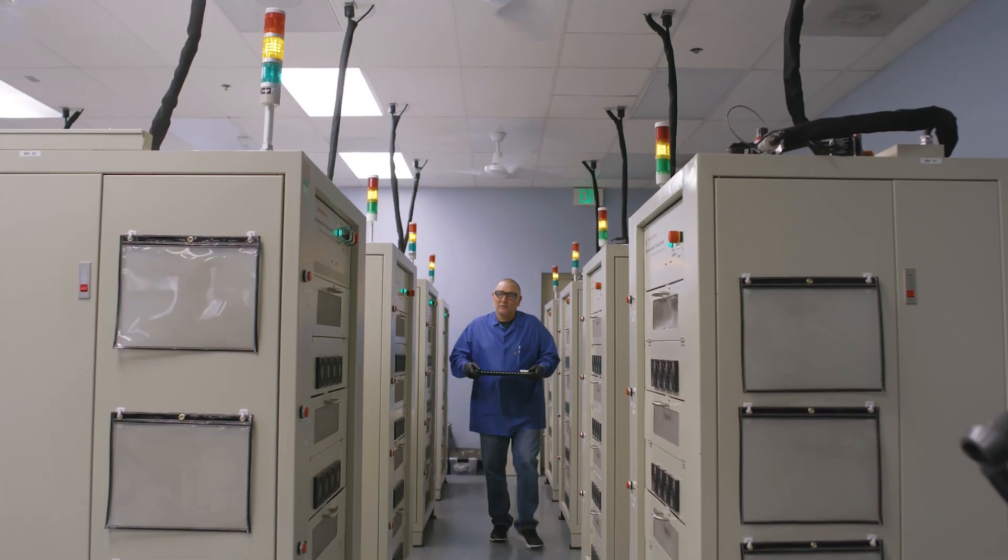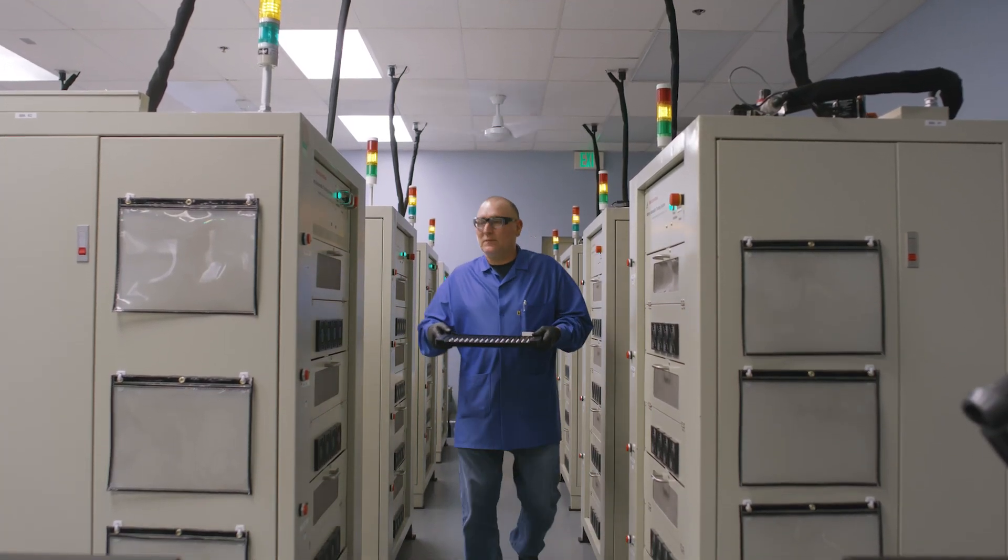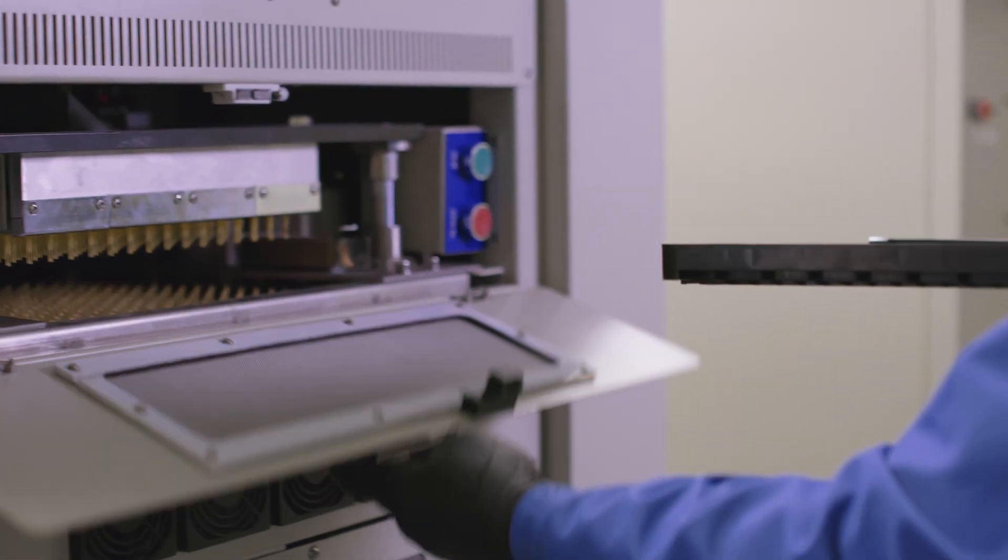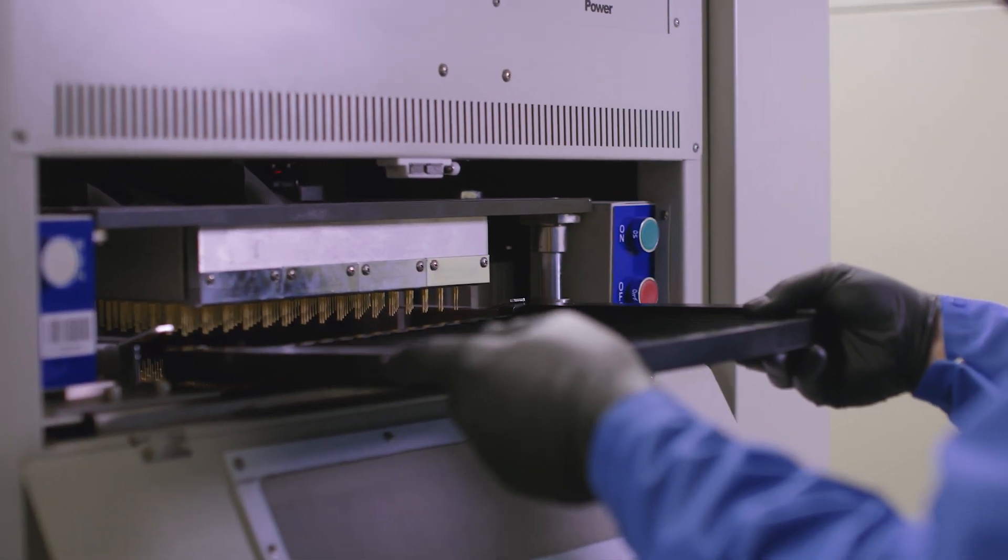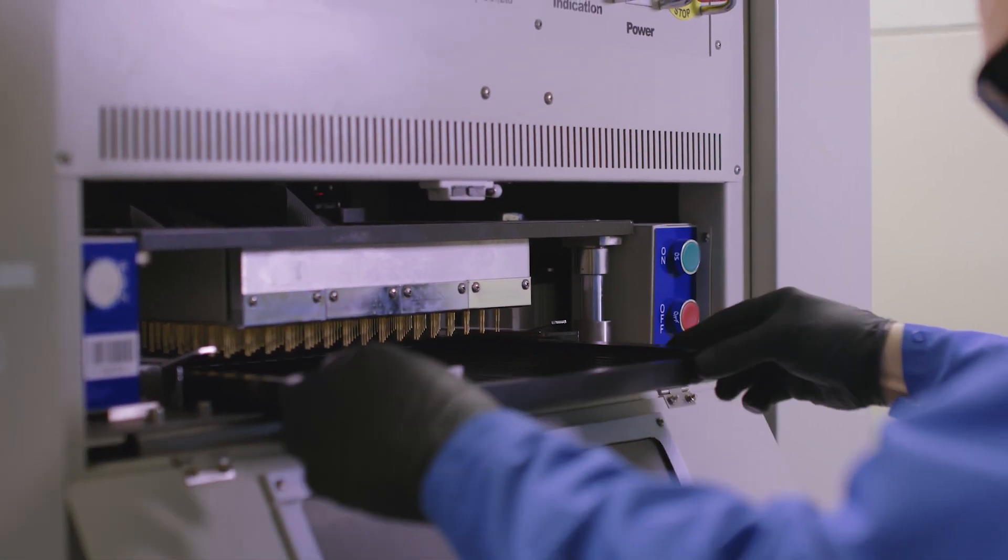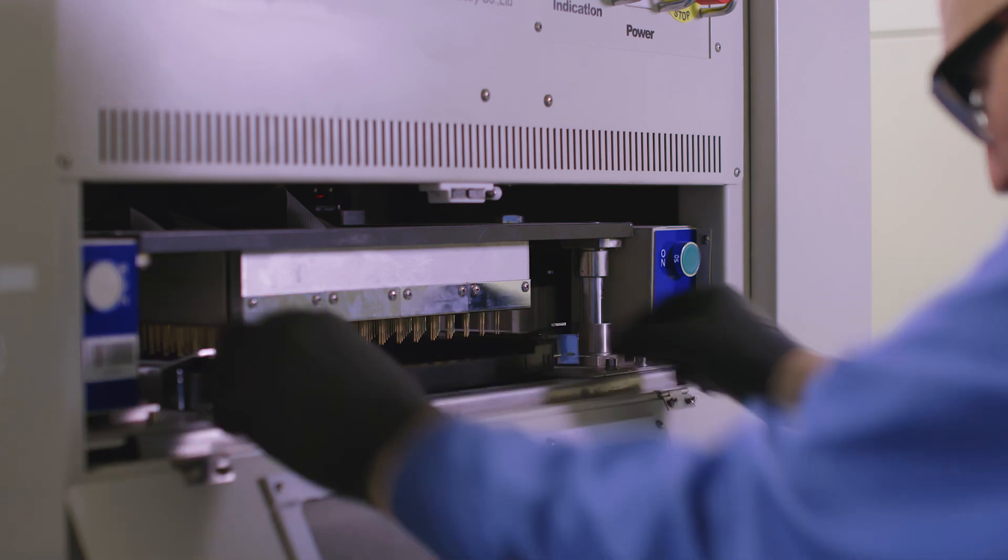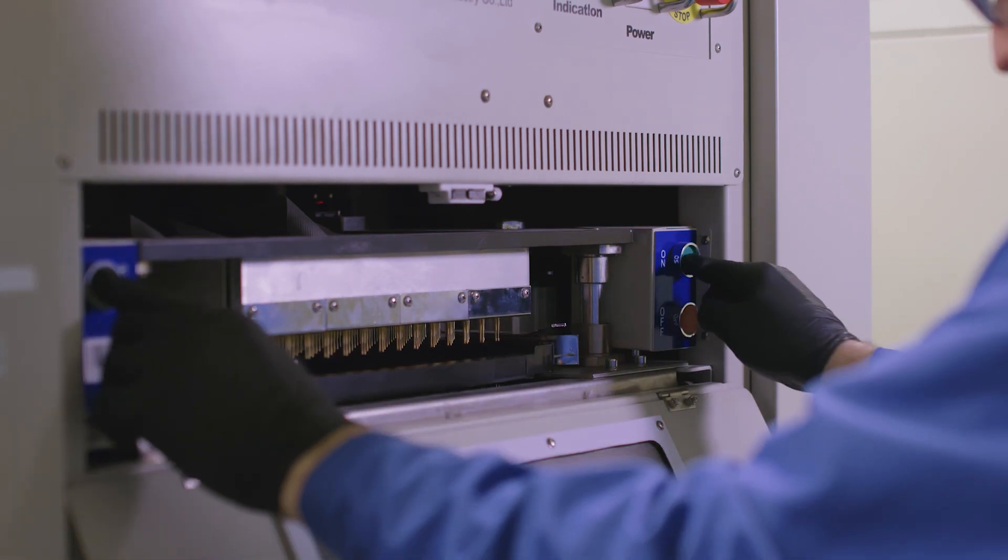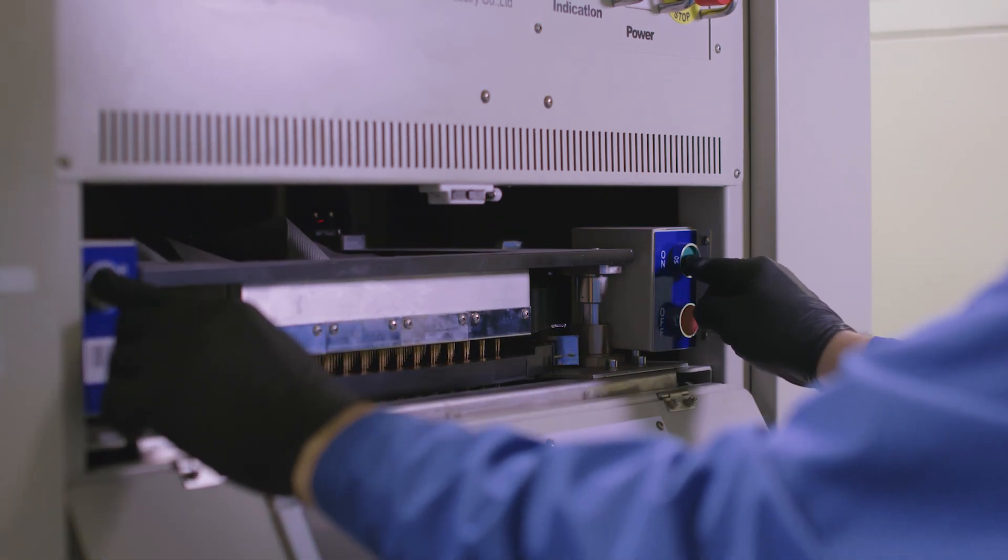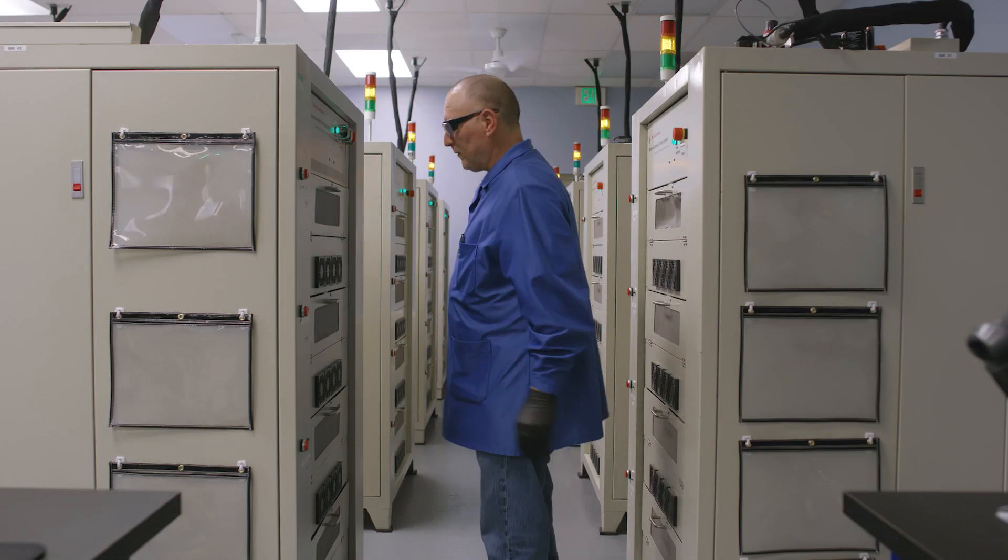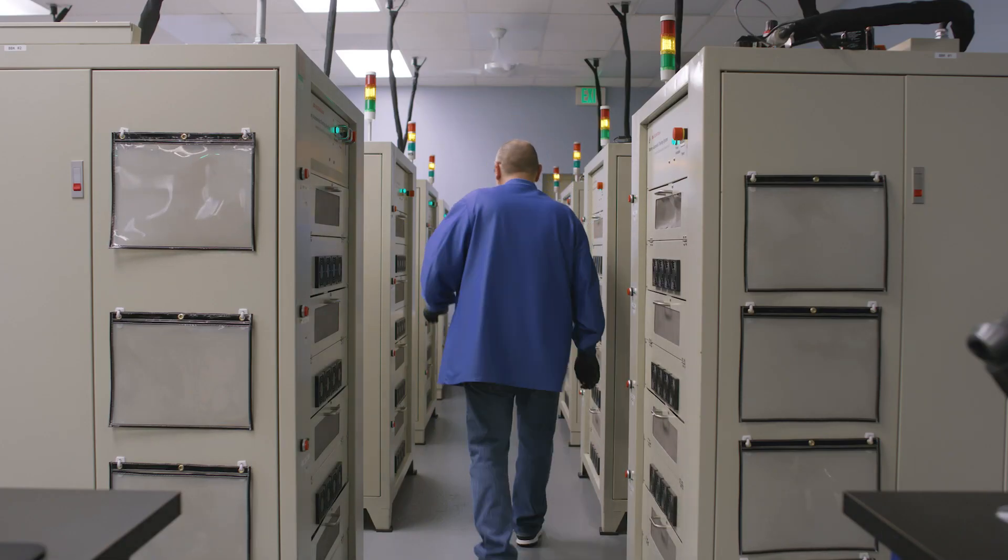Formation and grading: Before shipping, it is important to form the cell to prepare it for a long life in the field. This is done by charging and discharging the cell, which typically takes over 48 hours. Once the cells have finished the formation process, they are then cycled twice at customer-specific rates. Each cell's barcode is read and its performance is recorded.